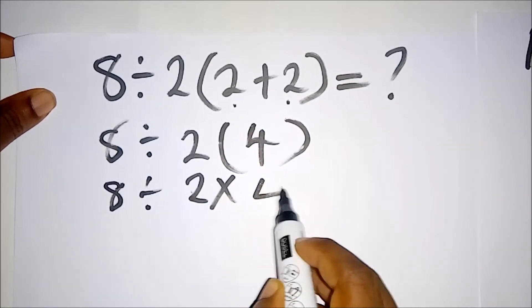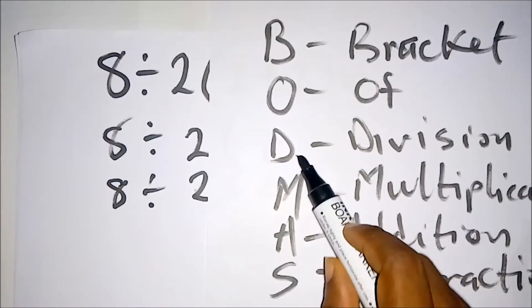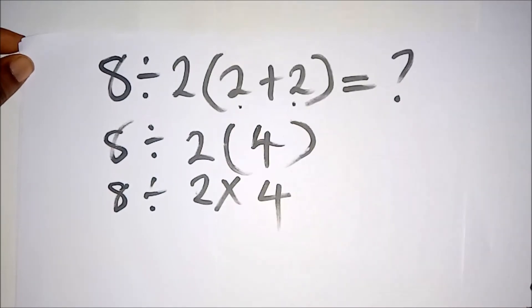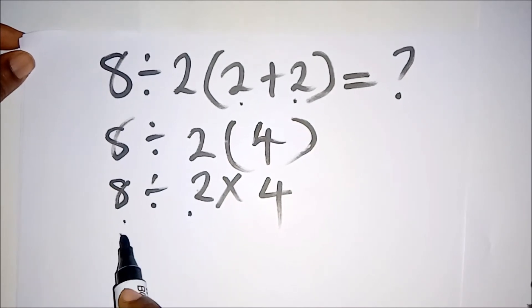So let's go back to BODMAS. What's the next order of operation we have to do? It says here Division. So we have to do division first before multiplication.